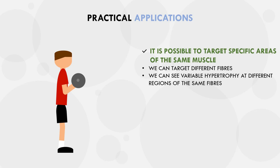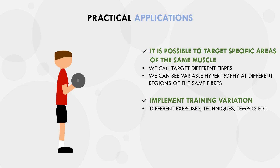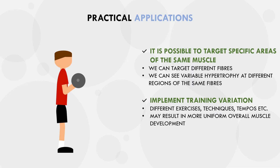For physique development, we generally want each muscle to be maximally developed at all portions. Therefore, the goal is to grow all fibers and all regions of each fiber to their maximal potential. So in practice, we should probably hit each muscle in various different ways throughout a training program and throughout a training career. Training with different exercises, techniques, tempos, lifting equipment, and so on can all provide a slightly unique training stimulus that will preference different fibers over others or different regions of the same fibers. Implementing different training methods over time will likely lead to more uniform overall muscle development across a lifting career.